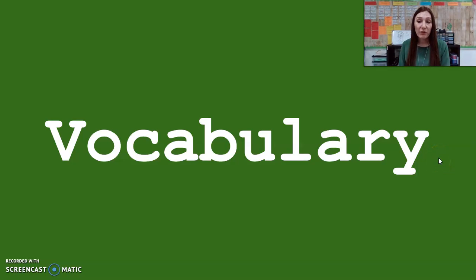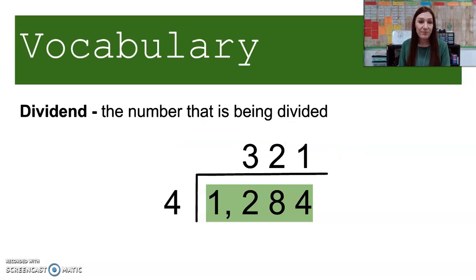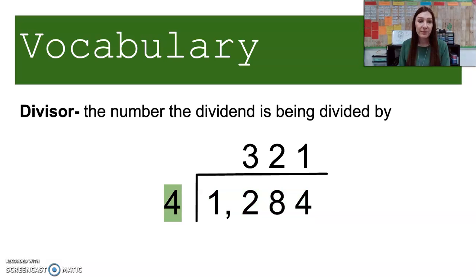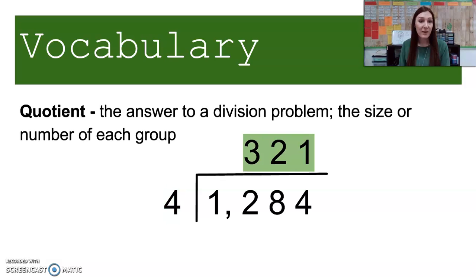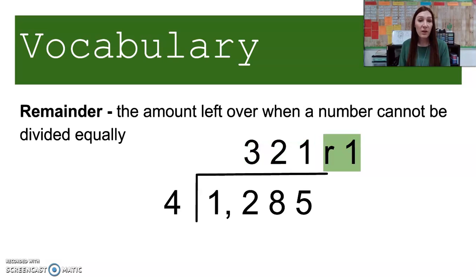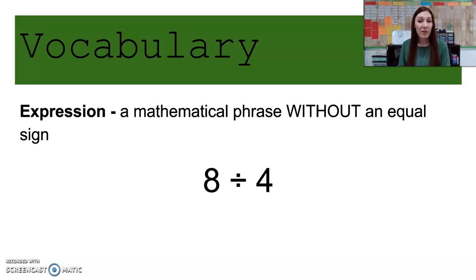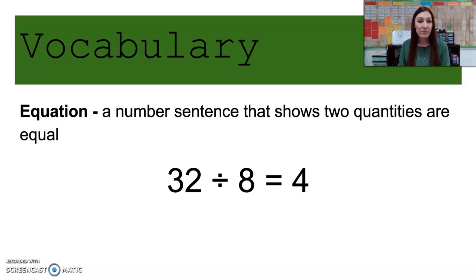Let's quickly go over our vocabulary for this lesson today. A dividend is the number that is being divided. Divisor is the number the dividend is being divided by. Quotient is the answer to a division problem or the size or number of each group. Remainder is the amount left over when a number cannot be divided equally. An expression is a mathematical phrase without an equal sign, and an equation is a number sentence that shows two quantities are equal.